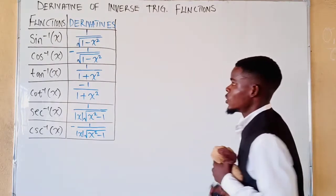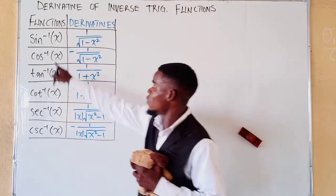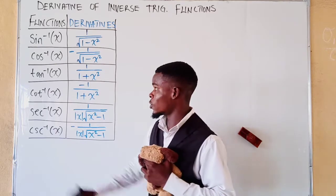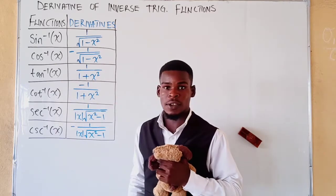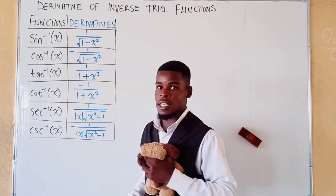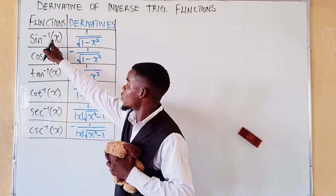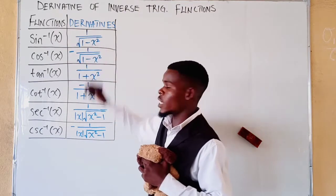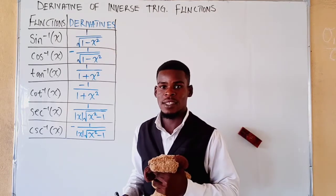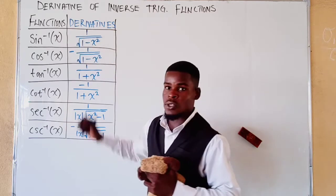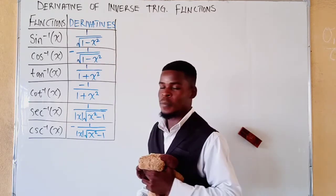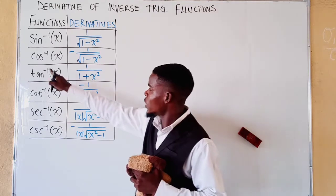Now let's get into how to find the derivatives of inverse trig functions. We have sine inverse, cosine inverse, tangent, cotangent, secant, and cosecant. The derivative of sine inverse of x is one over the square root of one minus x squared. To remember it, think of a fraction whose denominator is a square root containing a difference of two squares: one minus x squared.